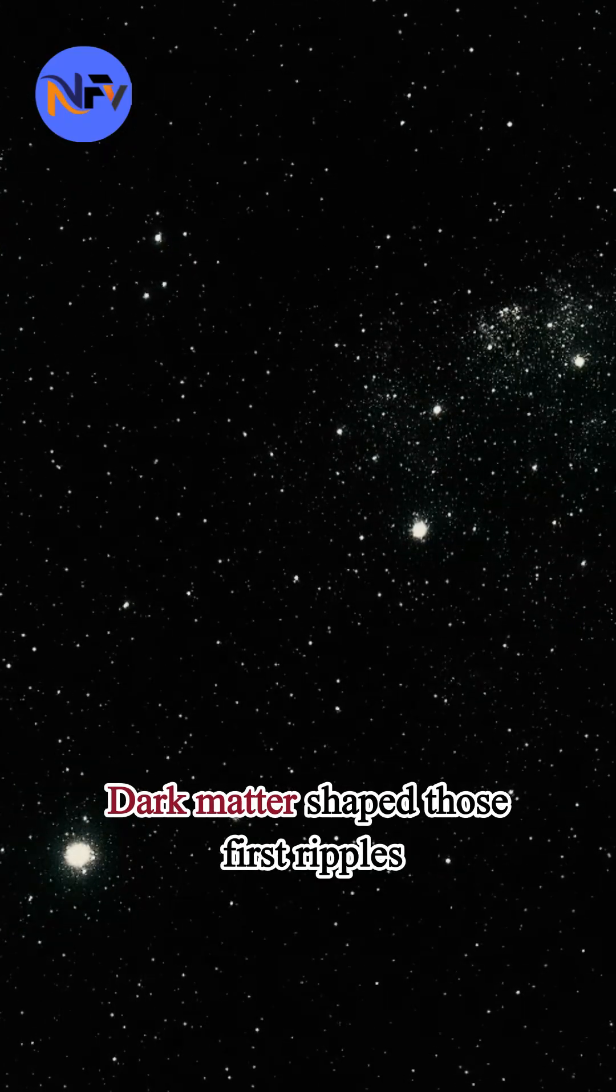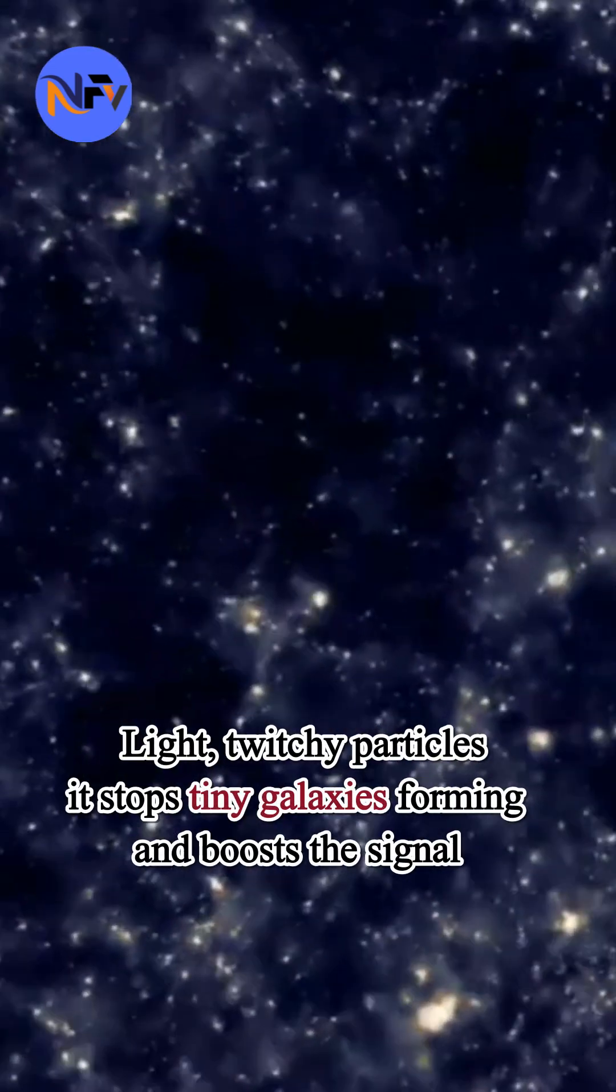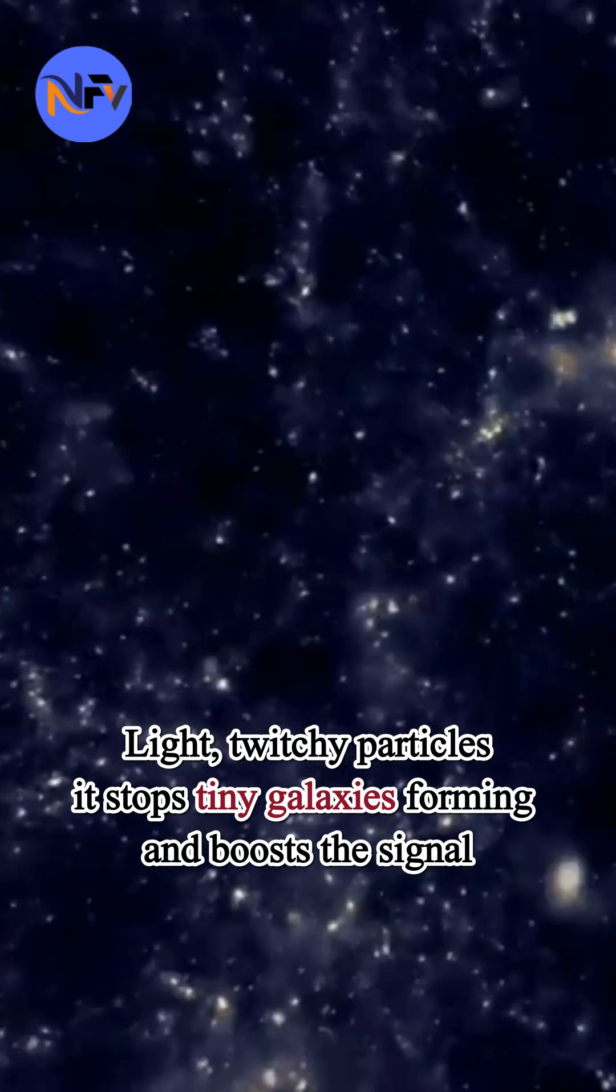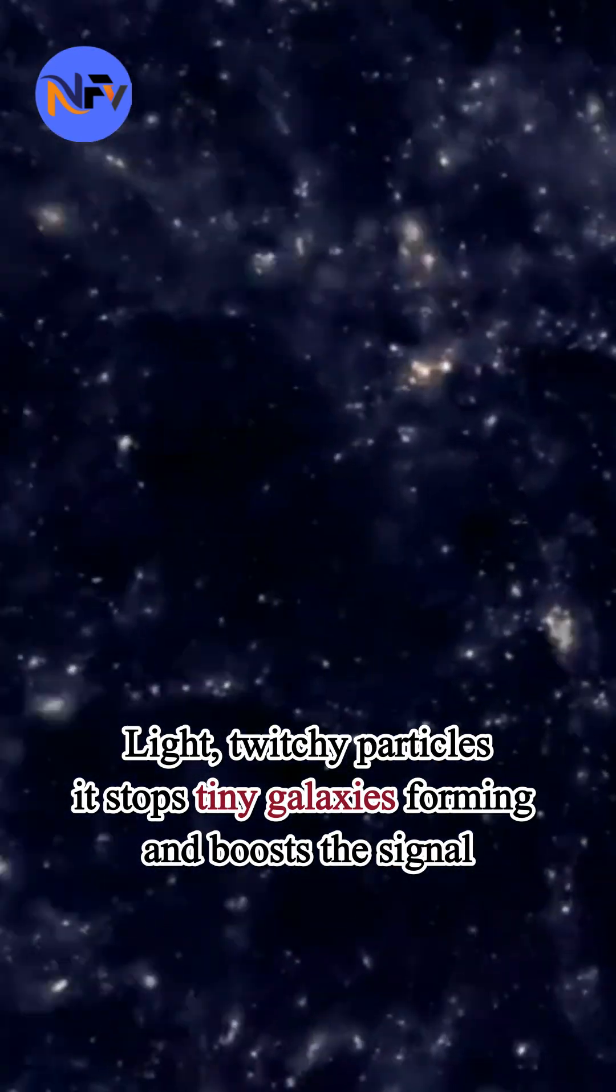Dark matter shaped those first ripples. Light, twitchy particles - it stops tiny galaxies forming and boosts the signal.